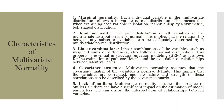Covariance Structures: Multivariate normality assumes that the covariance matrix of the variables is positive definite. This implies that the variables are correlated and the nature and strength of these correlations can be described by the covariance matrix.